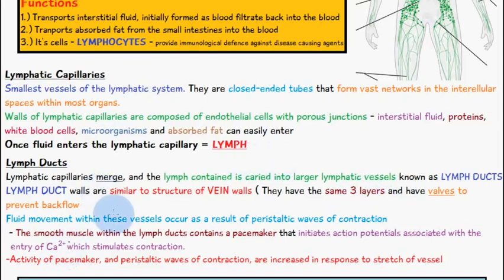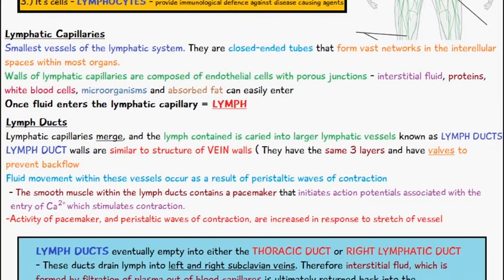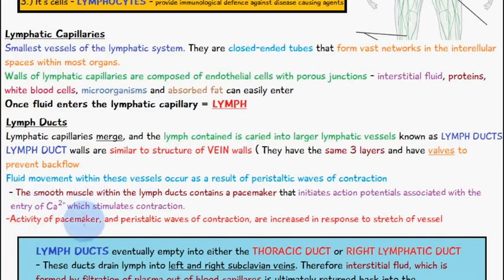Fluid movement within these vessels occurs as a result of peristaltic waves of contraction, which help to squeeze the lymph across. The smooth muscle within the lymph ducts contains a pacemaker that initiates the action potential associated with the entry of calcium ions, which stimulates the contraction. The activity of the pacemaker and the peristaltic waves of contraction are increased in response to the stretch of a vessel.